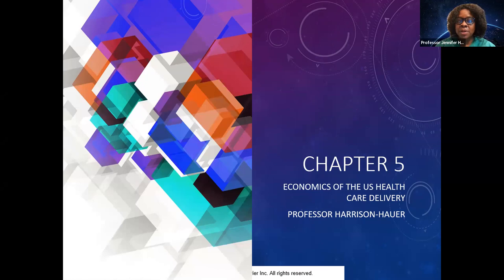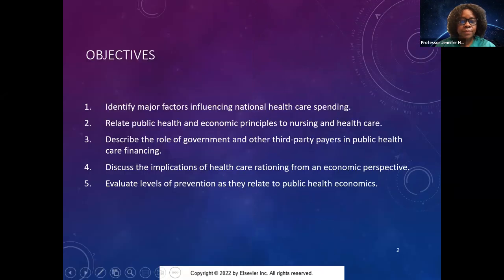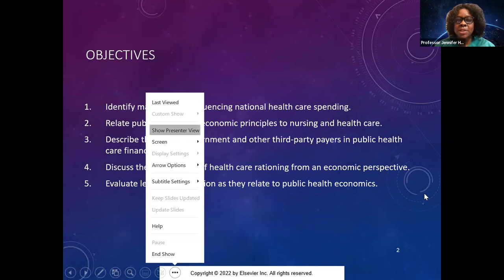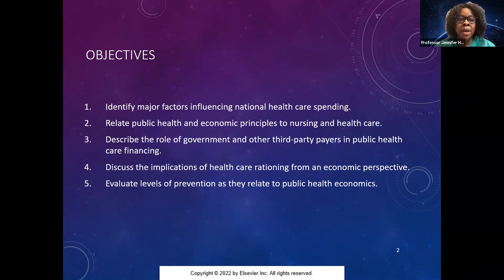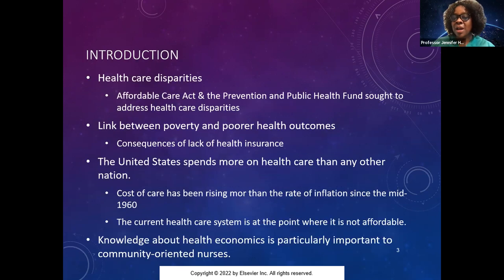We're going to talk about economics of the U.S. health care delivery — very important to understand as a future nurse. We're going to identify the factors influencing national health care spending, public health and economic principles to nursing and health care, the role of government, third party payers and public health care financing, implications of health care rationing, and levels of prevention as they relate to public health economics. How are those monies allocated for the health care of the population?